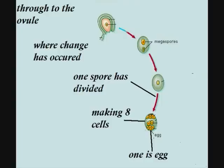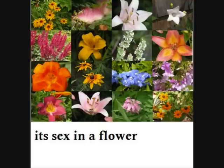Where change has occurred: one spore has divided, making eight cells — one is egg. It's sex in a flower.